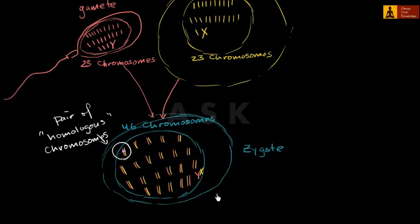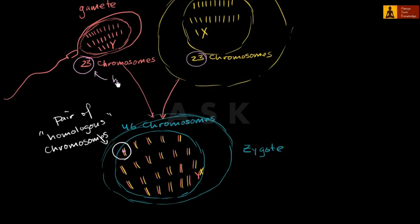So these are homologous chromosomes — they code in general for the same things. The zygote has 46 chromosomes, or you could say it has 23 pairs of homologous chromosomes. This is the case for human beings. If we're talking about some other species, instead of 23 pairs of homologous chromosomes or 46 chromosomes in total, you might be talking about 10 pairs of homologous chromosomes with 20 chromosomes in total. To help biologists clarify the number of chromosomes for a given species, they introduce two words: haploid and diploid.